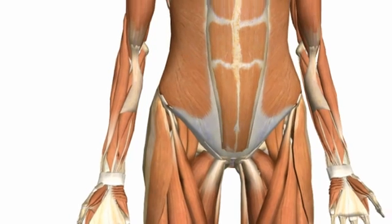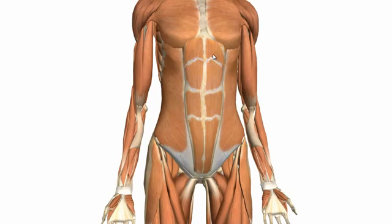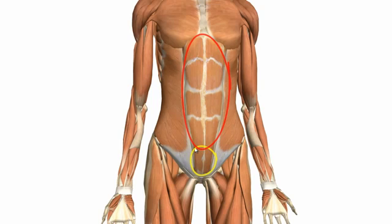The rectus abdominis and pyramidalis muscles are enclosed in something called the rectus sheath — a tendinous sheath formed by the aponeuroses of the three lateral muscles. The upper three quarters of the rectus abdominis are fully enclosed by this rectus sheath, whereas in the bottom quarter only the anterior surface is covered. A cross-section will be used to show this rectus sheath.